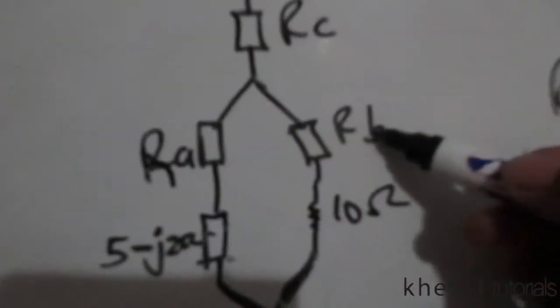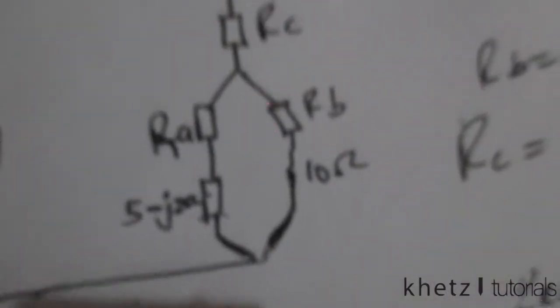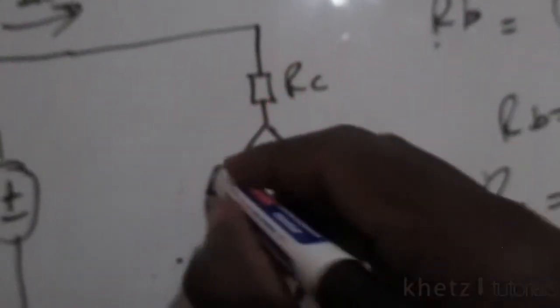Now that we have all these values, you'll see that RA is in series with this impedance, and RB is in series with the 10-ohm impedance. You can add these two, and the result will be one large impedance each. These two resulting impedances are in parallel with each other because they share two nodes.